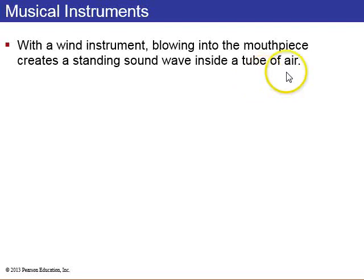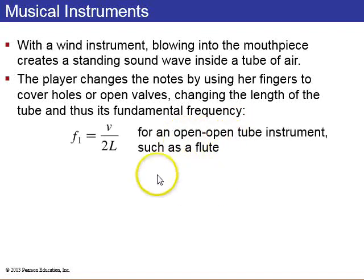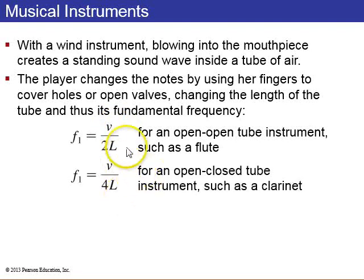In a wind instrument, you blow over the mouthpiece, and that creates a standing wave inside the tube of air. And you can change the notes on a wind instrument by using your fingers to cover holes or open valves, effectively changing the length of the tube. So v here is the speed of sound in whatever air inside the tube, and l is the length. So if there's an open-open tube, such as a flute, open at both ends, the frequencies are v over 2 l. And for an open-closed tube, like a clarinet, the frequency, the fundamental frequency is v over 4 l.